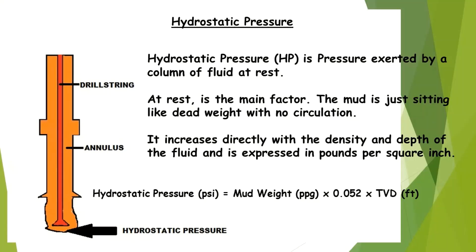Hydrostatic pressure is the pressure exerted by a column of fluid at rest — at rest being the main factor. The mud is just sitting like dead weight with no circulation. It increases directly with the density and depth of the fluid and is expressed in pounds per square inch. The formula for hydrostatic pressure is: true vertical depth × 0.052 (a constant) × mud weight.